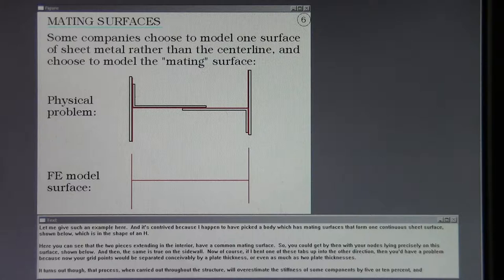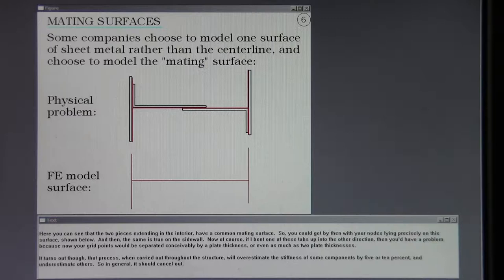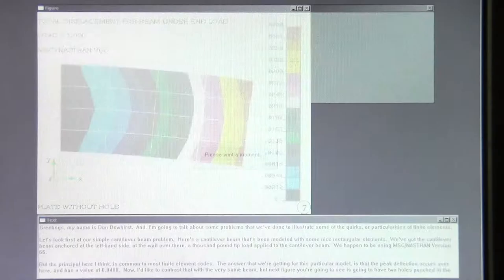Let me give such an example here and it's contrived because I happened to have picked a body which has mating surfaces that form one continuous sheet surface shown below which is in the shape of an H. Here you can see that the two pieces extending an interior have a common mating surface. So you could get by then with your nodes lying precisely on this surface shown below. And then the same is true on the side wall. Now, of course, if I bent one of these tabs up in the other direction, then you'd have a problem because now your grid points would be separated conceivably by a plate thickness or even as much as two plate thicknesses. It turns out, though, that process, when carried out throughout the structure, will overestimate the stiffness of some components by five or ten percent and underestimate others. So in general, it should cancel out.